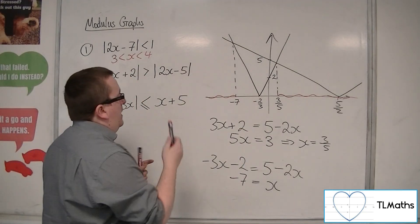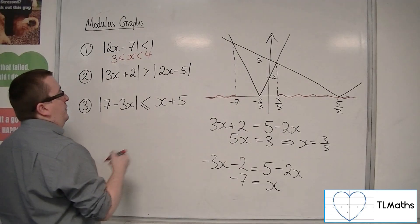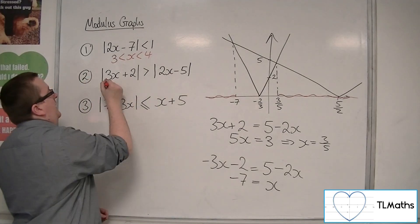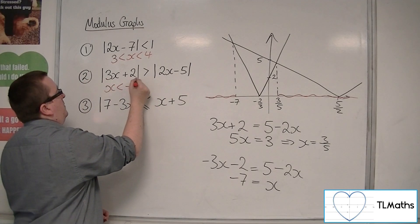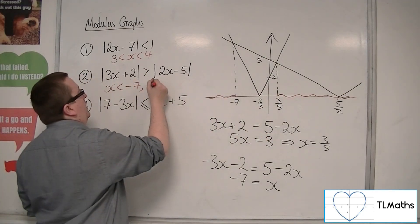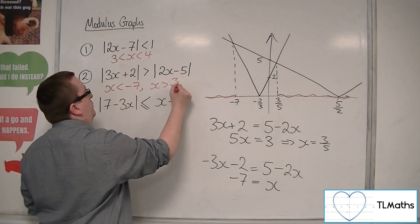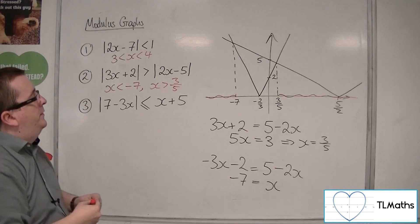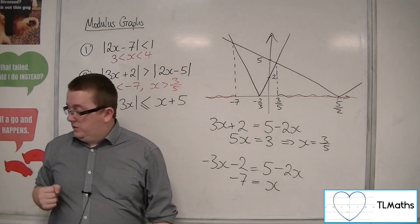So, the solution to my inequality is that x would have to have been less than minus 7, that region, and greater than 3 fifths. So, 2 regions, 2 inequalities. Okay. And that's how I can solve it.